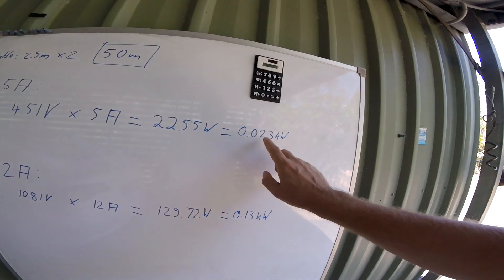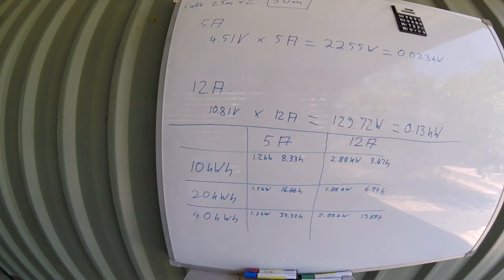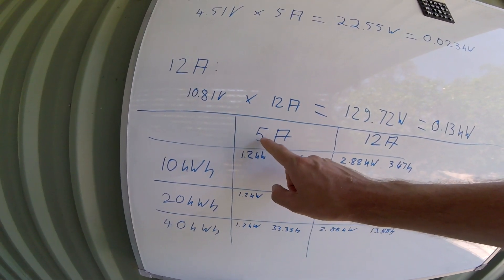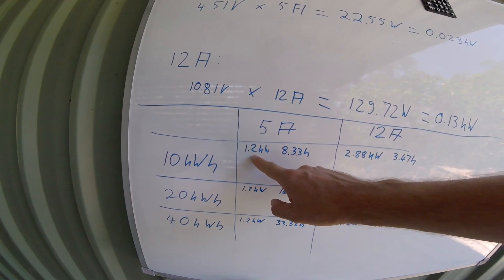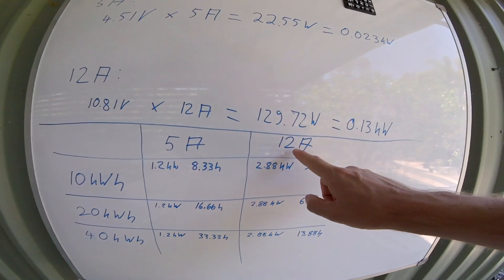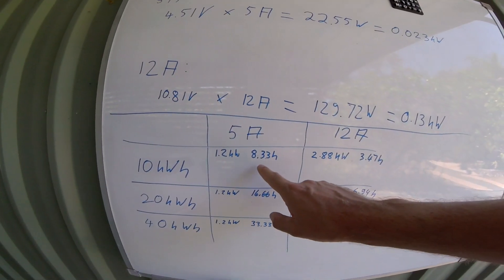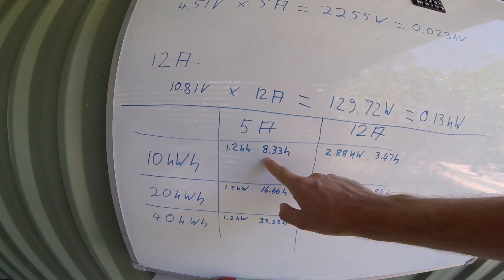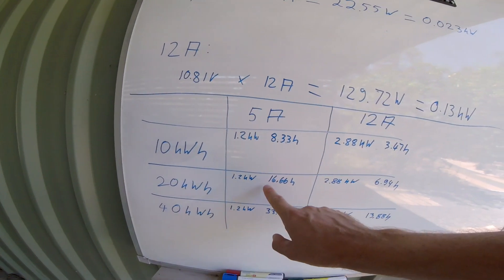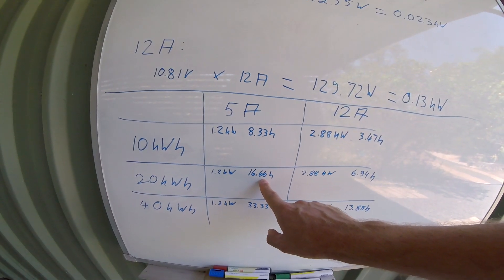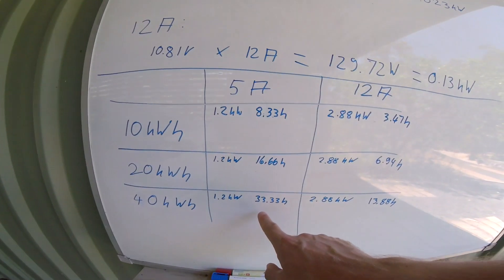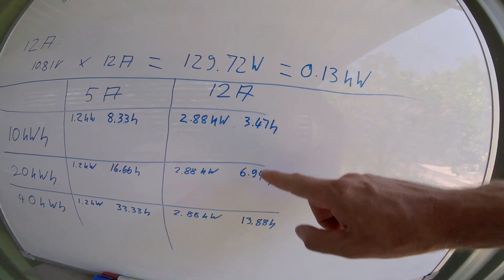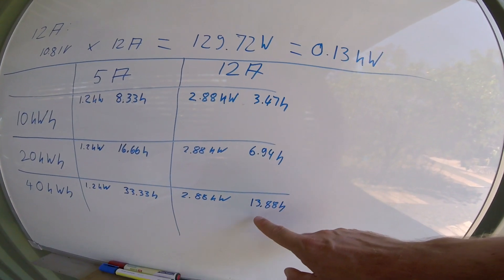So what I have done here, I have calculated the maximum power going into the car. So we're always charging on 5 amp here, so 1.2 kilowatt for all the settings. And on 12 amp we get 2.8 kilowatt. This is the charging time to charge 10 kilowatt hours on 5 amp: 8 hours 33. 20 kilowatt hours, double the time: 16.66 hours. And 40 kilowatt hours would take 33 hours. The same for the 12 amp settings: three and a half hours here, almost seven hours, and 14 hours to charge on 12 amp 40 kilowatt hours.